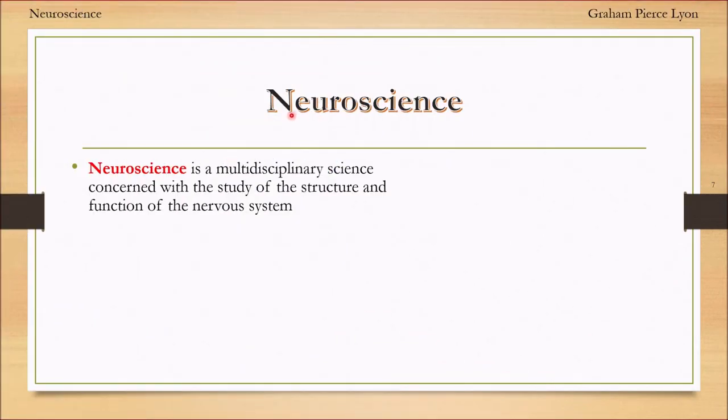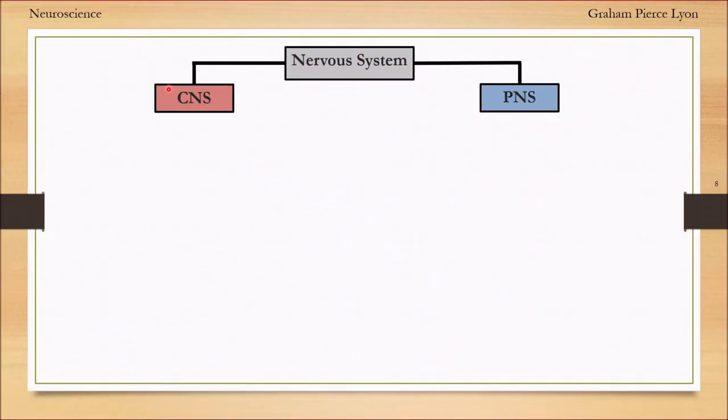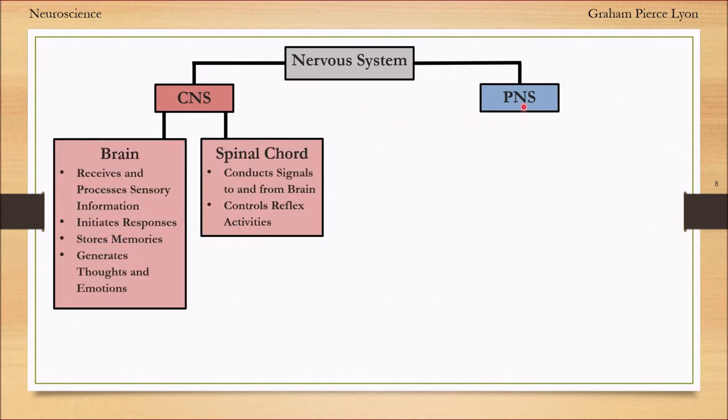Neuroscience is a multidisciplinary science concerned with the study of the structure and function of the nervous system. The central nervous system and the peripheral nervous system are the two main components. Your brain receives and processes sensory information, initiates responses, stores memories, thoughts and emotions. Your spinal cord conducts signals and controls reflexes.